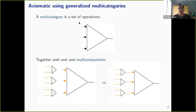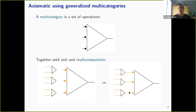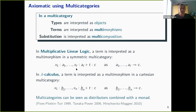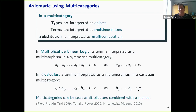Graphically, a multi-category is a set of operations with a sequence of input types and one output type, and the multi-composition is: if you have one operation and a sequence of operations, you can plug them together to have one operation. In multiplicative linear logic, a term is interpreted as a multi-morphism in a symmetric multi-category; in lambda calculus, it is interpreted in a Cartesian generalized multi-category. Our question was: what is the right generalized multi-category for the linear nonlinear setting? For this, we need to look at a multi-category as a distributor combined with a monad for the context.